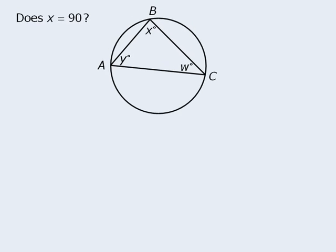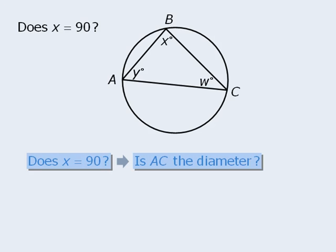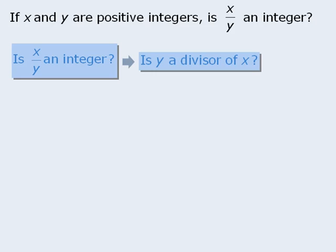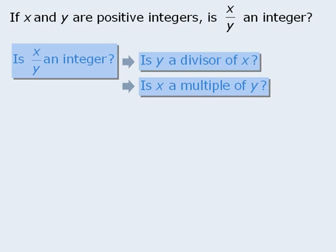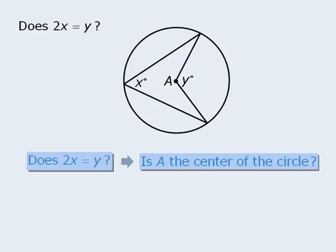What about this one? The target question asks: does x equal 90? Another way to phrase this is: is AC the diameter of the circle? Here we are told that x and y are positive integers, and the target question asks: is x over y an integer? This is a frequently tested concept related to integer properties. We can rephrase this as: is y a divisor of x? Or is x a multiple of y? In another example, the target question is: does 2x equal y? We can rewrite this as: is A the center of the circle? If not, you might want to review the circle properties.